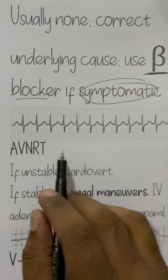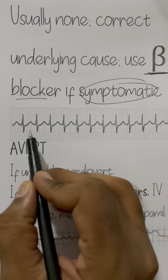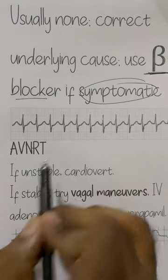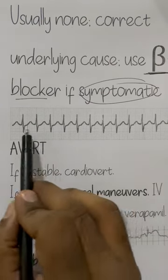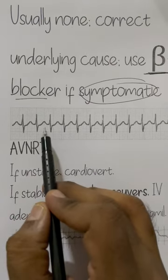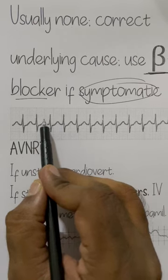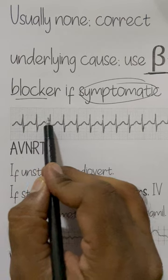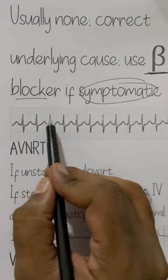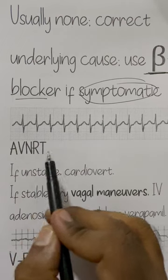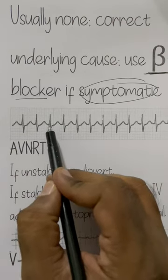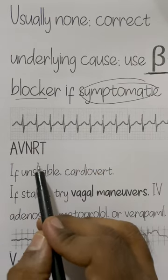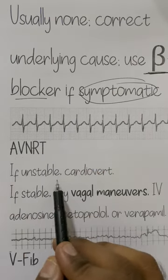Hello, this is Dr. Murli Bhardwaj on the Vongo app. Let us talk about AV nodal reentrant tachycardia. How do you recognize it? First, this is a tachycardia because between the two QRS complexes there are only two large boxes, so the heart rate is around 300 divided by 2, which is 150. Second, the P wave is hidden inside the QRS — that is how you recognize AVNRT.